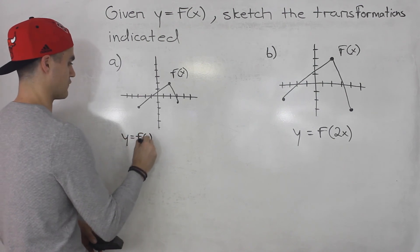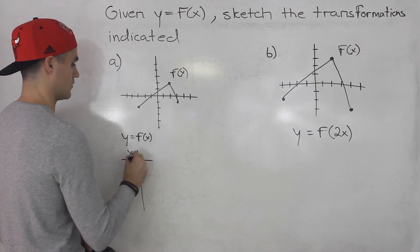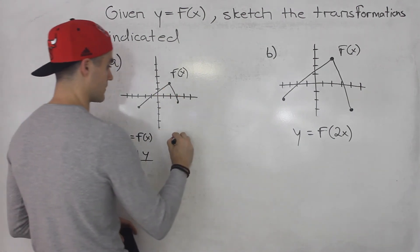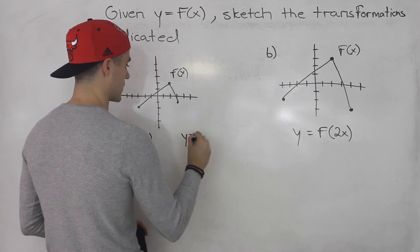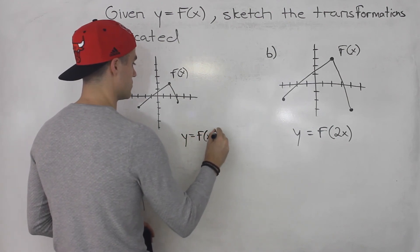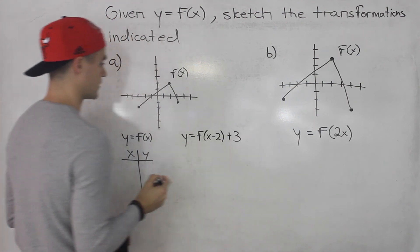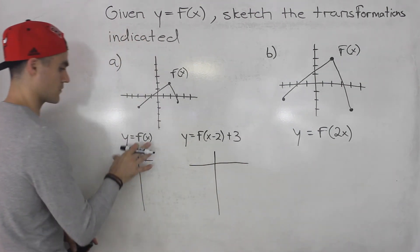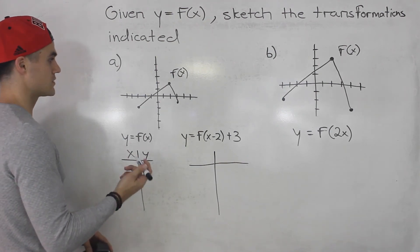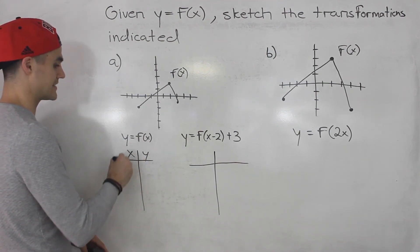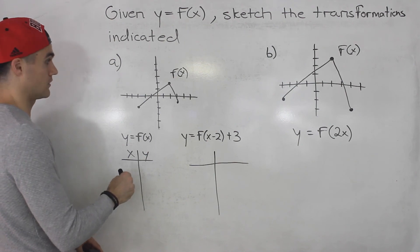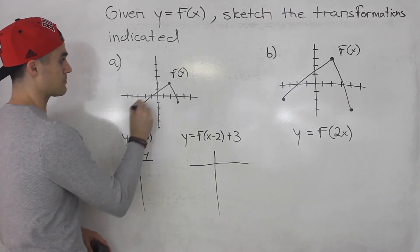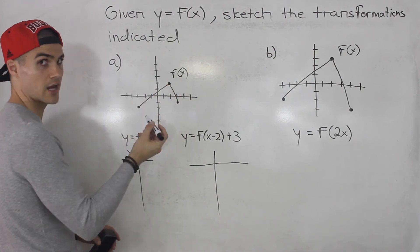So y is equal to f of x — here's the table for the quote-unquote parent function. This is going to be the parent function and then we're going to transform it to f of x minus two plus three. It's almost like the same process: we're going to be taking points from the parent function and then transforming them. You want to list out points on the parent function if you're given a graph, and the points I always like to pick are any corner points where the graph is changing.